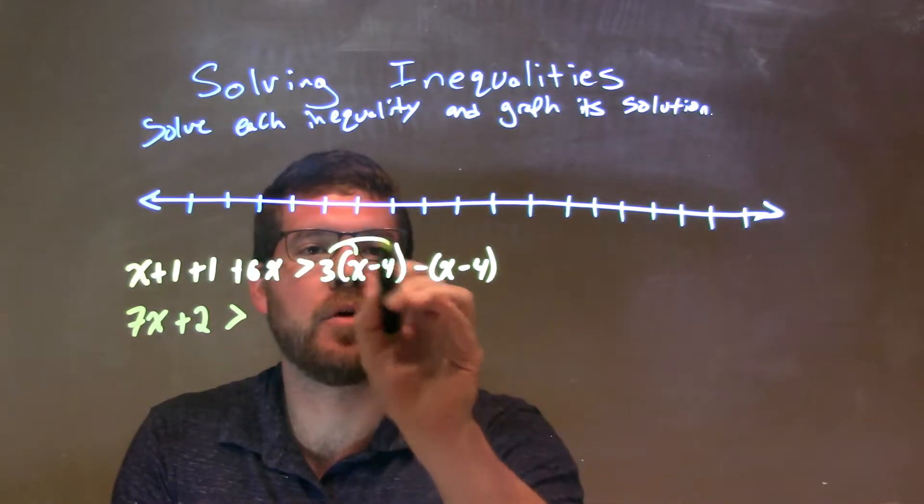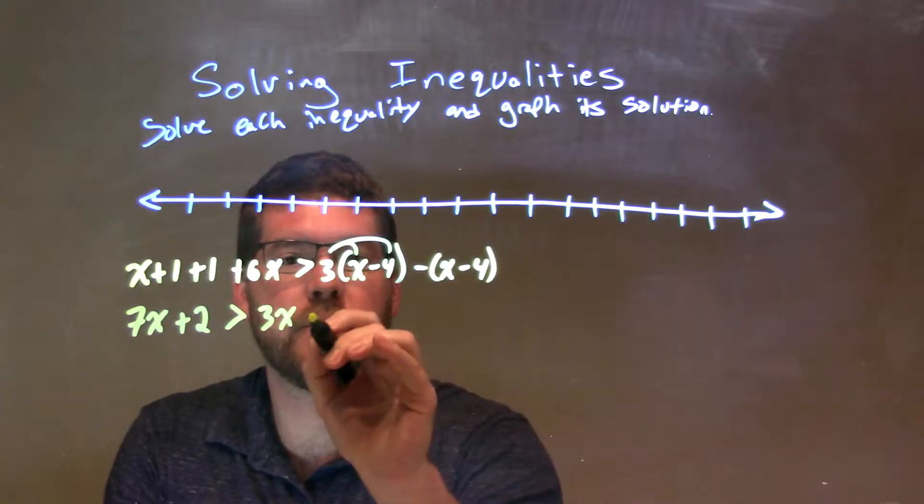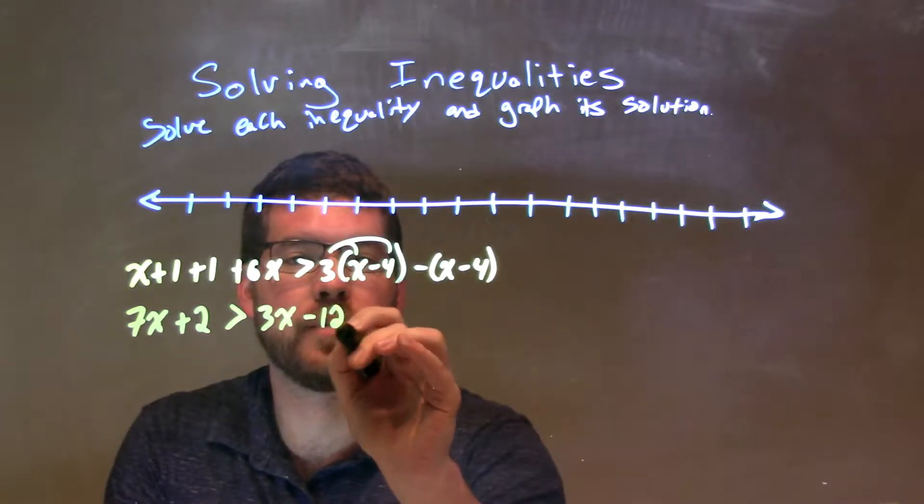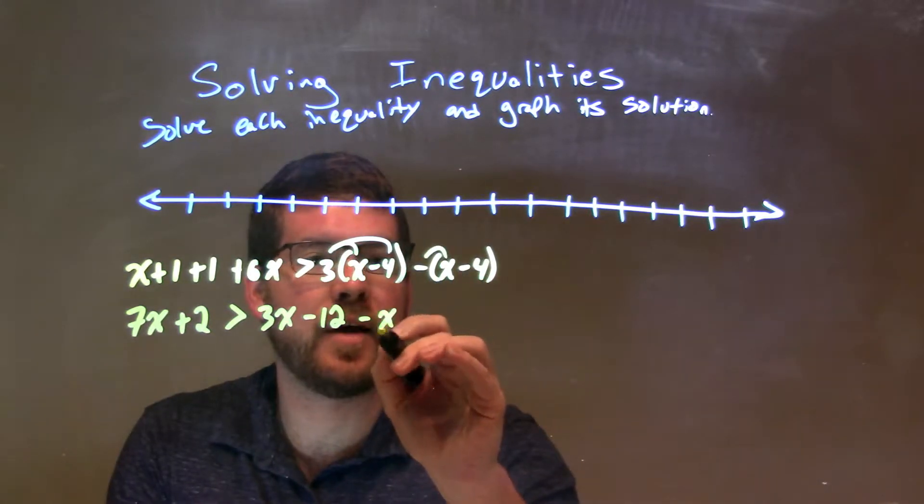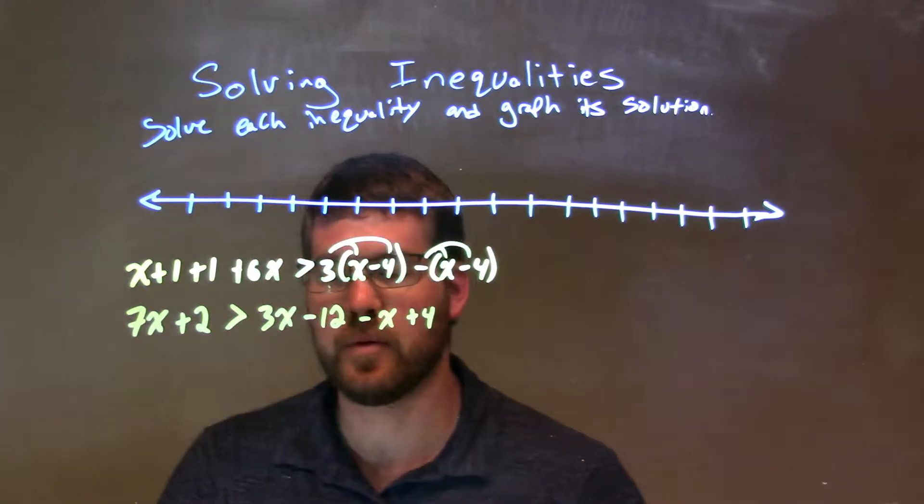We're going to distribute the 3 across both parts here. So, we have 3x minus 3 times 4 is 12, and then I'm going to distribute this minus sign as well. We have a minus x, and then now a positive 4.